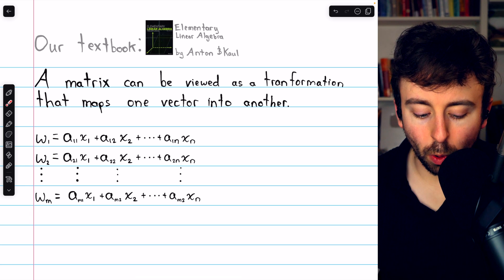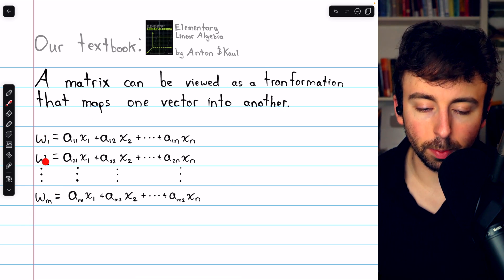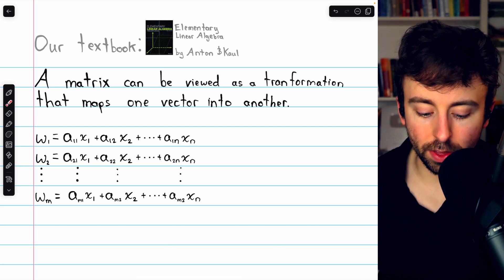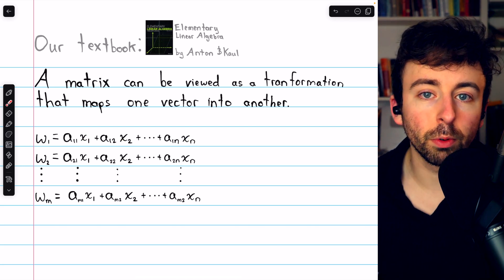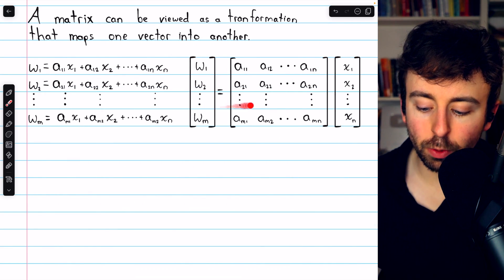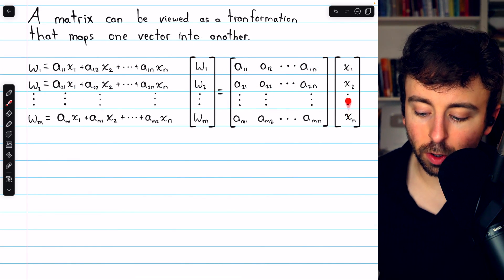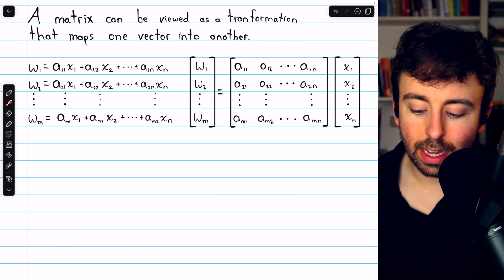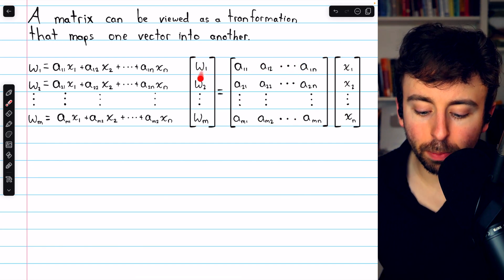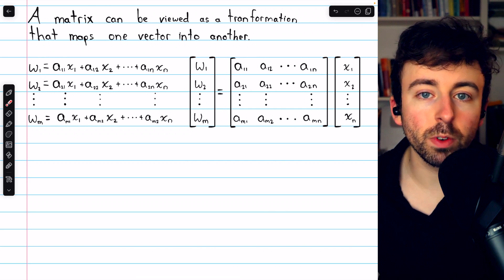Each equation, of course, describes how to get a particular component — w1, w2, or whichever it is — based on the input variables x1 through xn. We can write this system in matrix form as well. Here's the input vector x1 through xn. Here's the coefficient matrix. And here's the output vector w1, w2, etc. through wm.